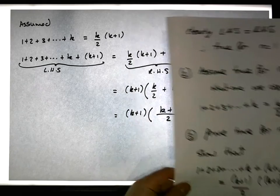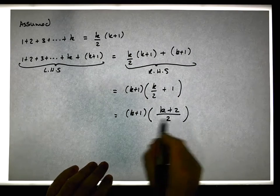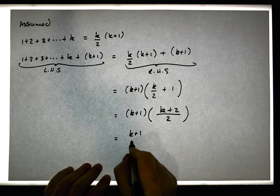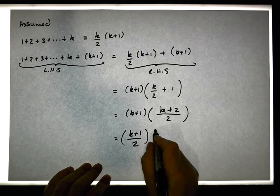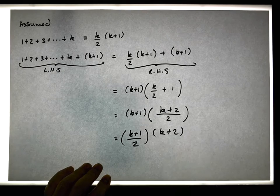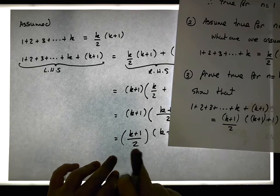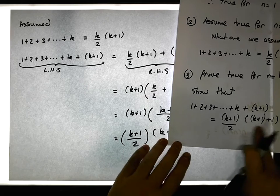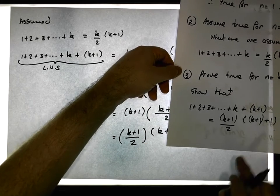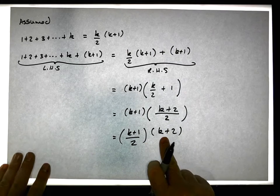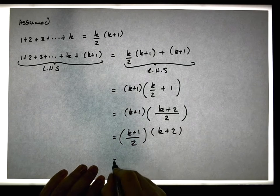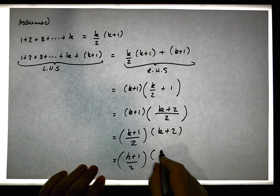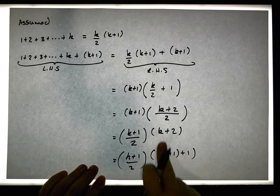That's actually the next term in the sequence. And we're nearly there — this is the same as k plus one over two times k plus two. We've now got the right hand side looking like k plus one over two, and we need this factor as well.